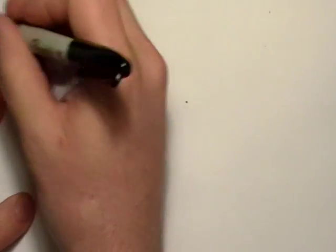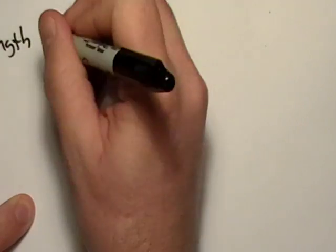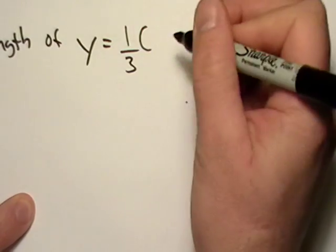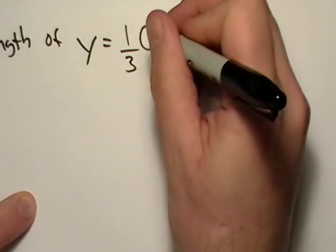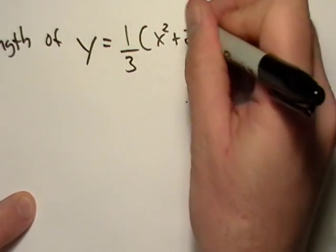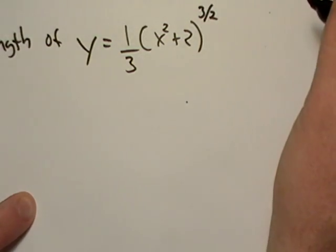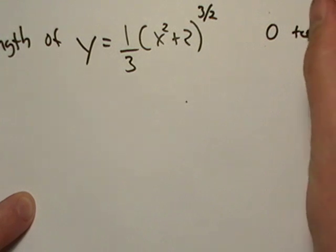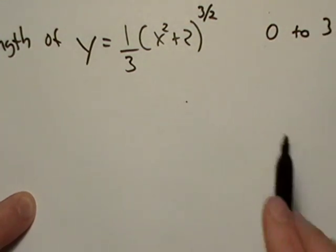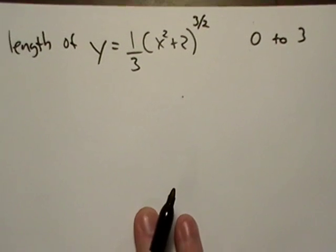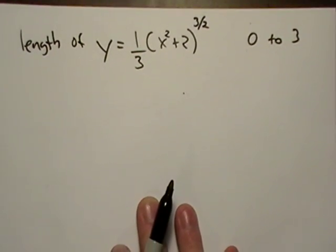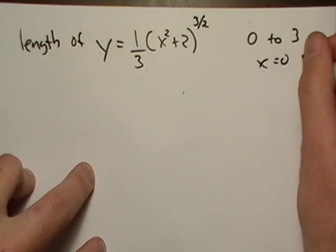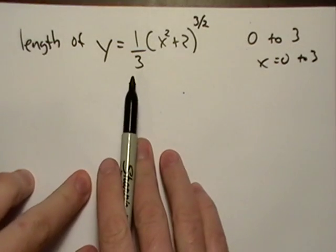I want to find the length of y equals one third x squared plus two to the three halves power and I want to go from zero to three, as far as x goes. I'm sorry, I didn't zoom out enough. So from x equals zero to three.